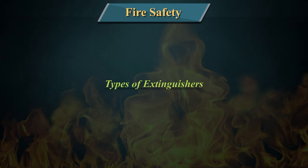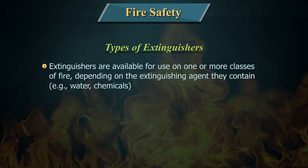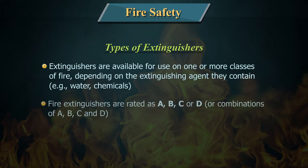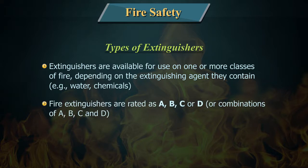Types of extinguishers: Extinguishers are available for use on one or more classes of fire depending on the extinguishing agent they contain — for example, water or chemicals. Fire extinguishers are rated as A, B, C, or D, or combinations of A, B, C, and D.